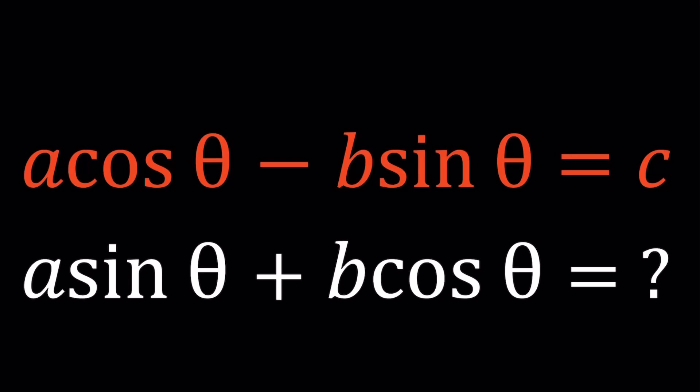Hello everyone. In this video, we're going to be dealing with trigonometric expressions. So we're given A times cosine theta minus B times sine theta is equal to C. A, B, C are given numbers, and we're supposed to evaluate A sine theta plus B cosine theta.